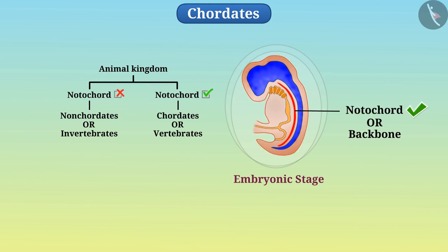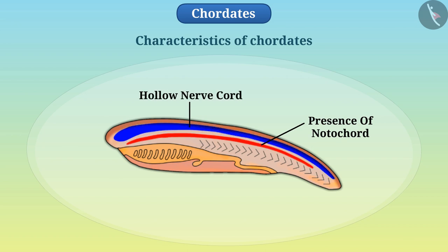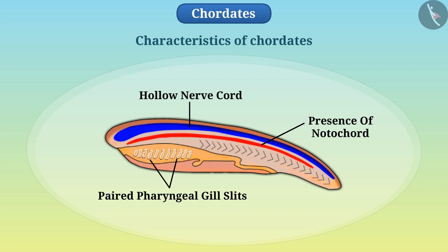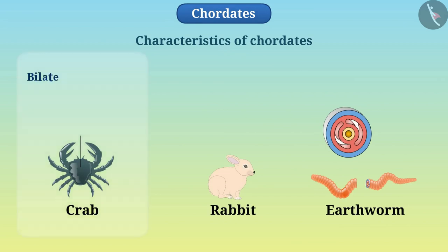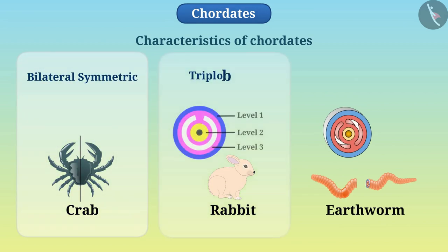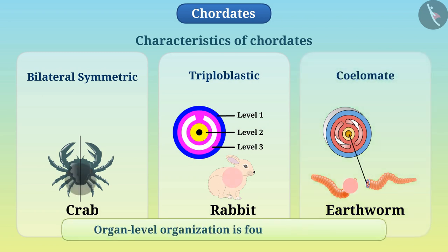Animals whose notochord is present in the embryonic state are called chordates. Some characteristics of the organisms of the chordate group are the presence of notochord at some stage of life, hollow nerve cord, and paired pharyngeal gill slits. All chordates are bilaterally symmetric, triploblastic and coelomate. Organ level organization is found in their body.